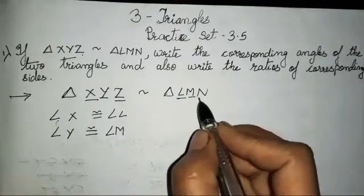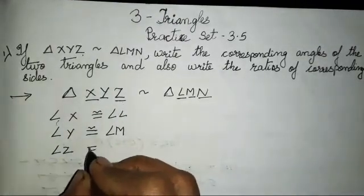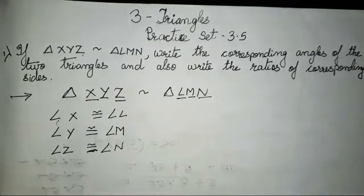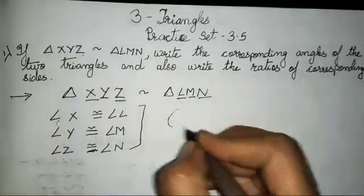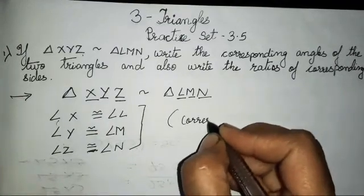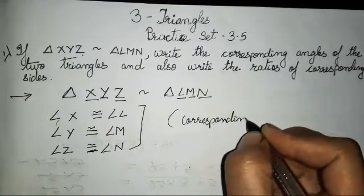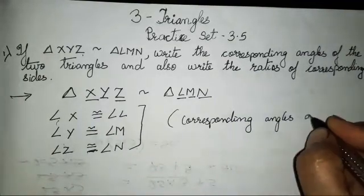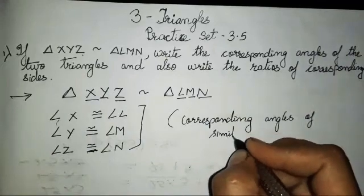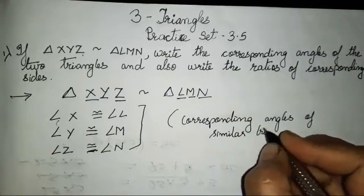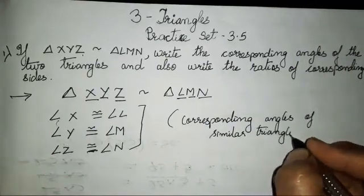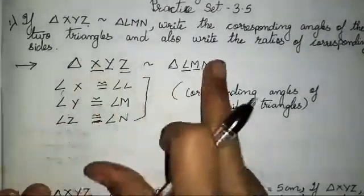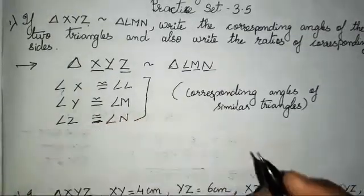So angle Z is congruent to angle N. These are the corresponding angles of similar triangles — you all have to write corresponding angles of similar triangles. They have been given in the same order, you all have to write it down. Now you all have to write the ratios.